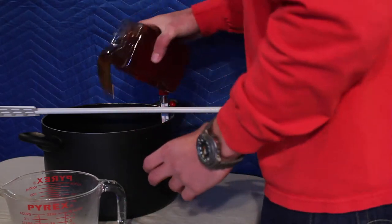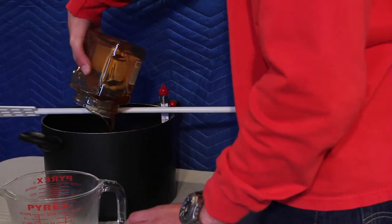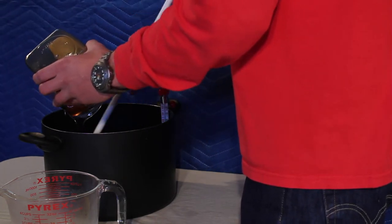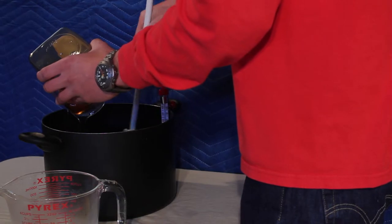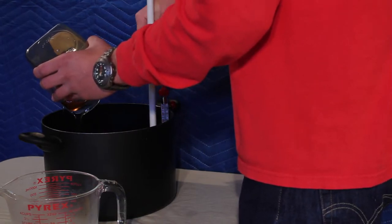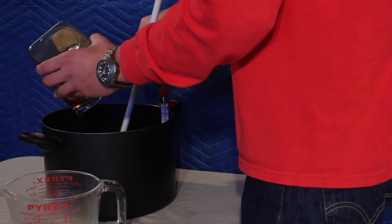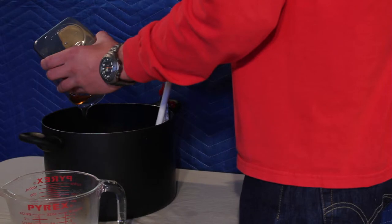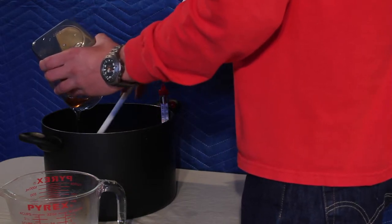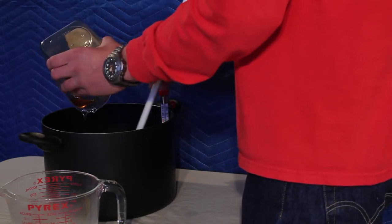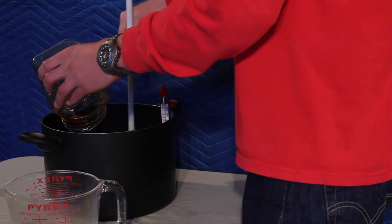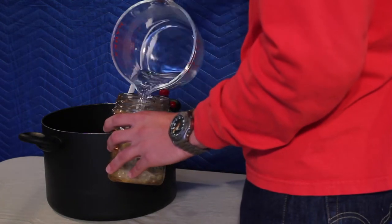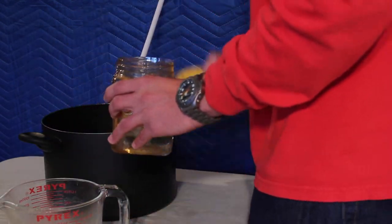We are going to heat up the two quarts we put aside to 115 degrees, then we are going to take it off heat so we do not scorch our honey when we pour it in. Stir and dissolve the honey.